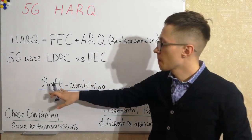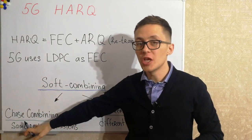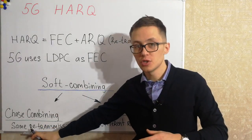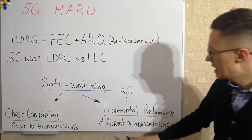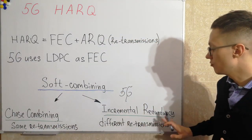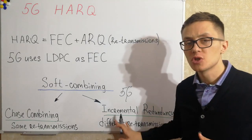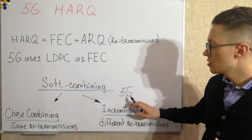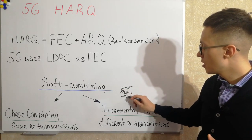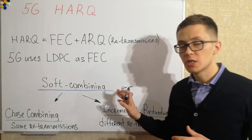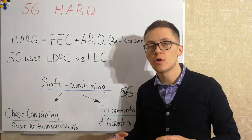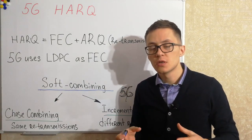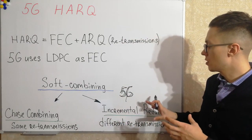So that's why there are two cases. The first one is chase combining. Chase combining is when for retransmissions we have the same information which was previously. And incremental redundancy is when for retransmissions used different information. In 5G networks we use incremental redundancy because incremental redundancy is better for high code rate schemes and this is better for high throughput.